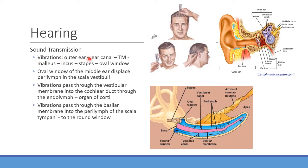The full sound transmission path: outer ear → ear canal → tympanic membrane → malleus → incus → stapes → oval window. The stapes vibrates the oval window, displacing perilymph in the scala vestibuli. Vibrations pass through the vestibular membrane into the cochlear duct (endolymph), activating the organ of Corti. Vibrations then pass through the basilar membrane into the perilymph of the scala tympani and exit via the round window. The pitch determines how far sound travels through the cochlea.